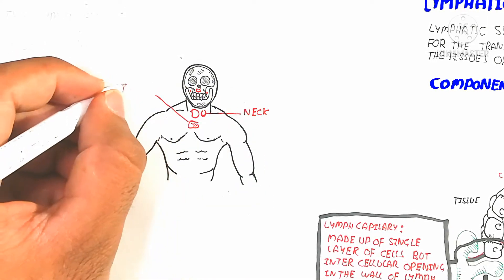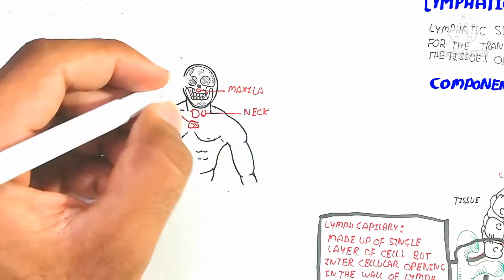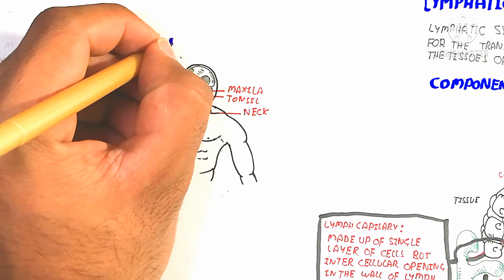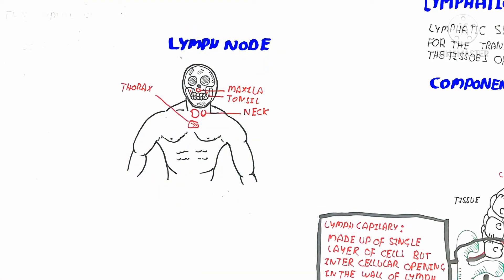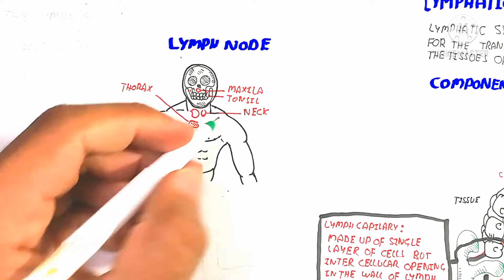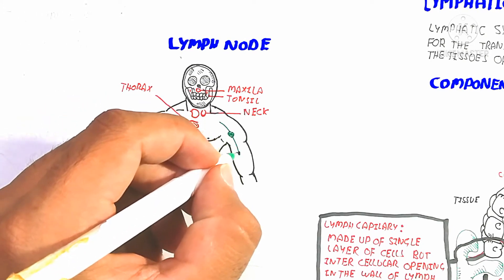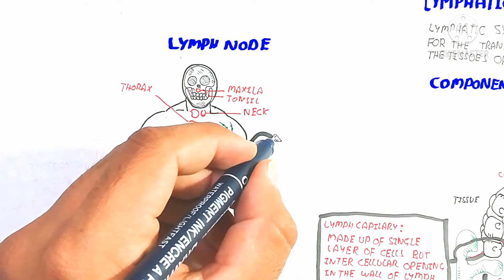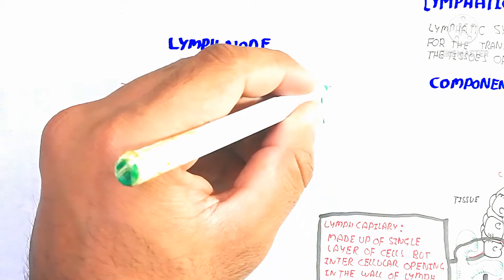The lymph node is found in different regions — for example, the thorax, the groin in the abdominal area, the maxilla, the tonsils, and the neck. The lymph node contains immune cells including T lymphocytes, B lymphocytes, and macrophages. Many lymph nodes are present, with larger lymph nodes in the maxilla, tonsils, neck, thorax, and the spleen.